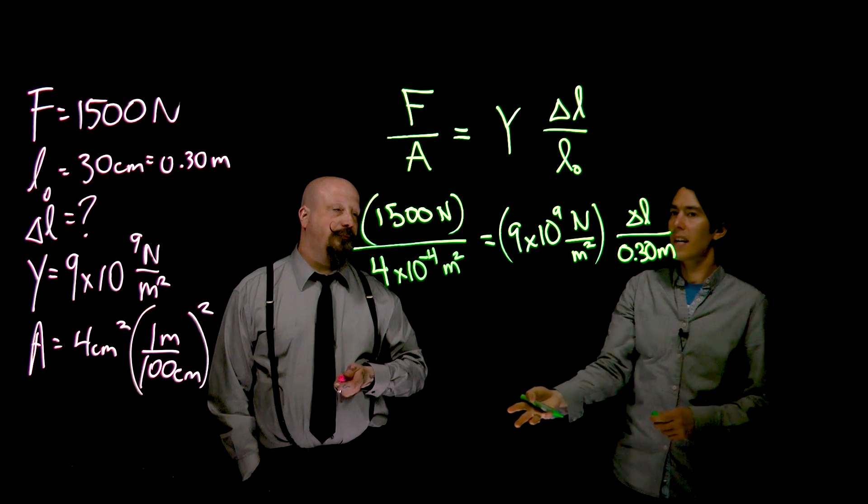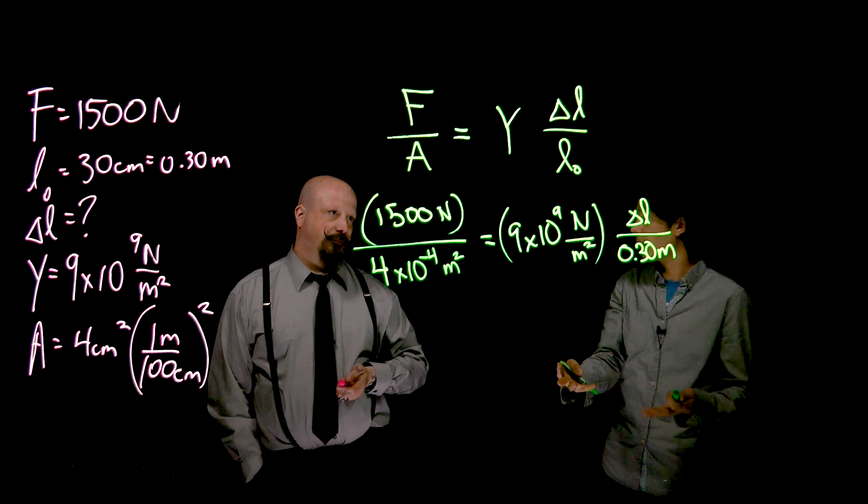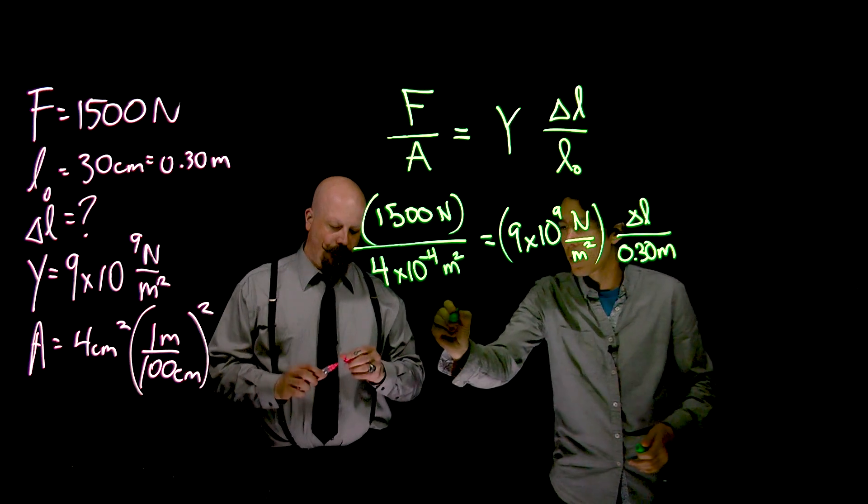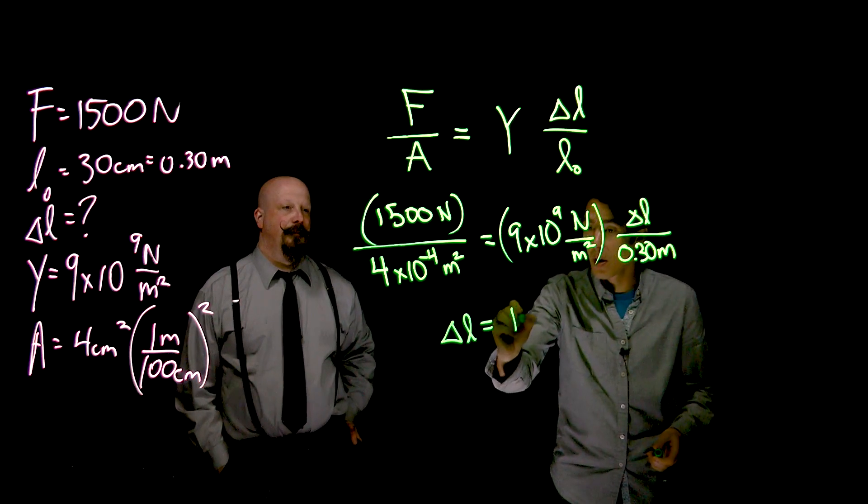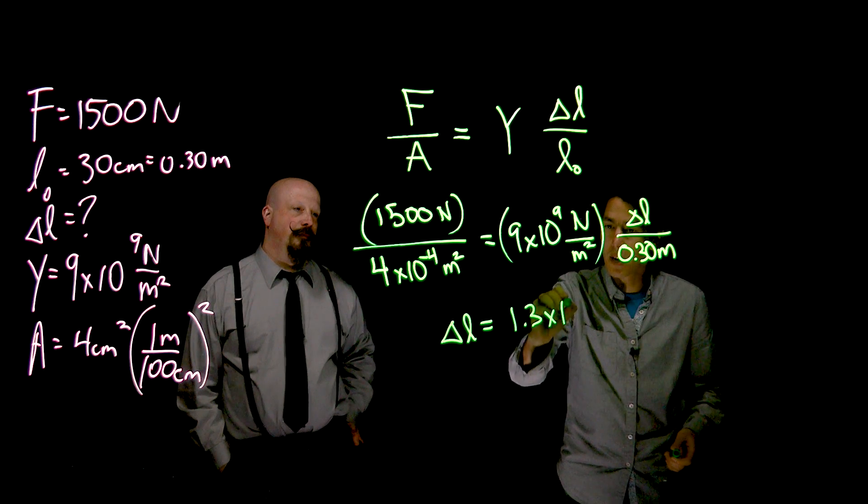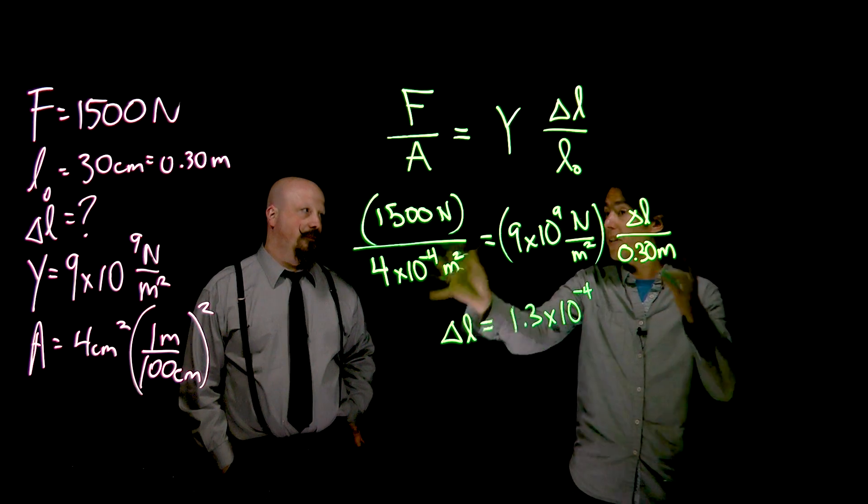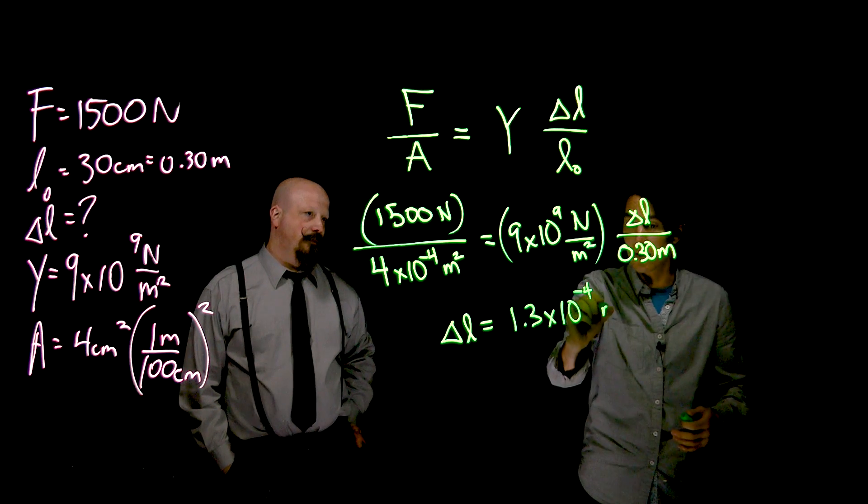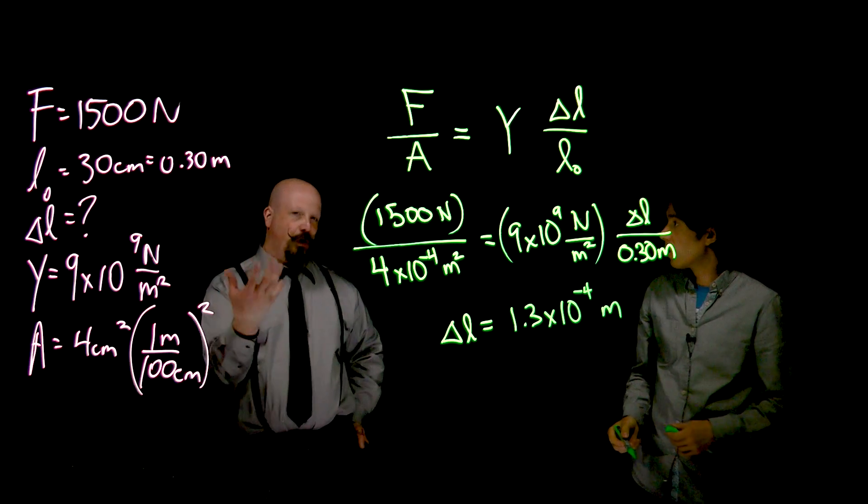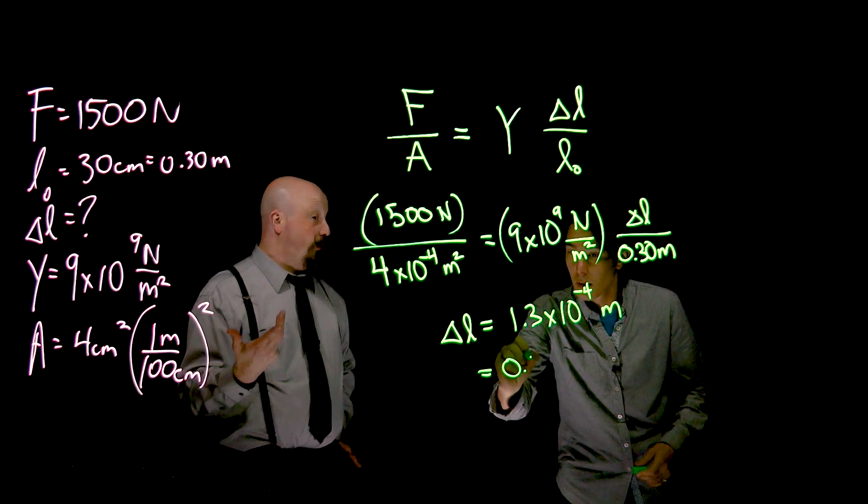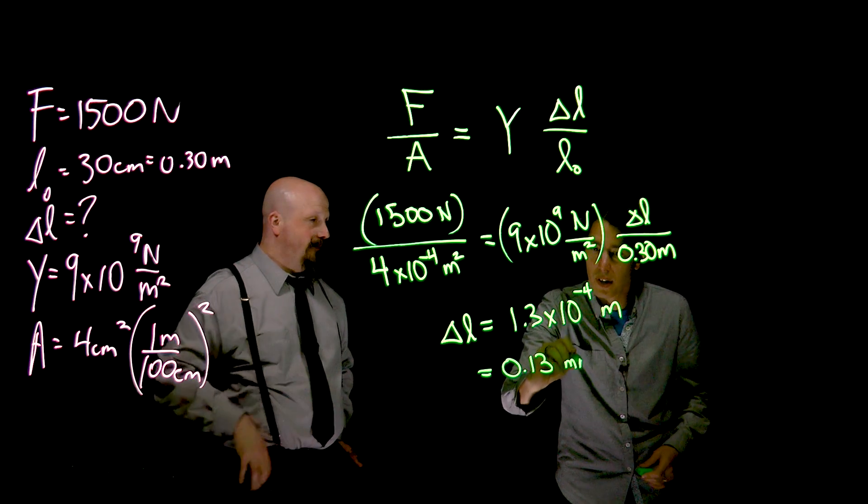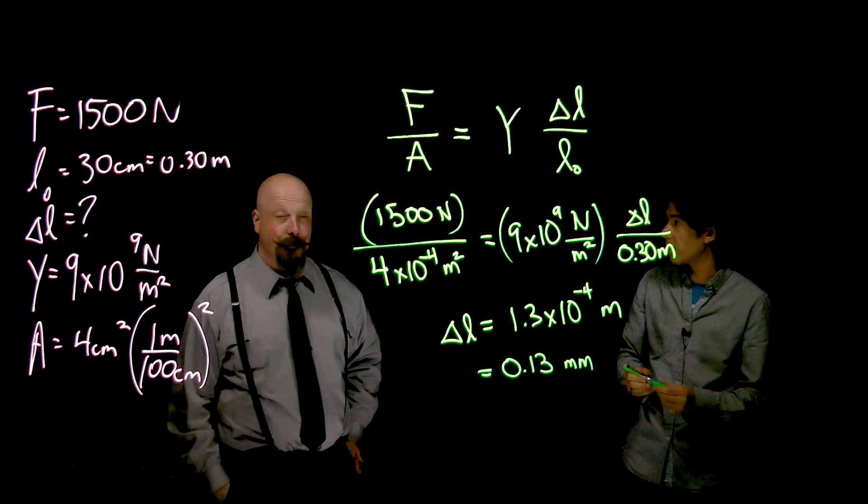Everything's in SI units. And so at this point, it's calculator work. Let's not bother going and rearranging the expression. But the final answer that you're going to get is 1.3 times 10 to the minus 4. Everything is in SI units. So this change in length comes out in meters. And if you're looking at that in terms of millimeters, that'd be 0.13 millimeters.